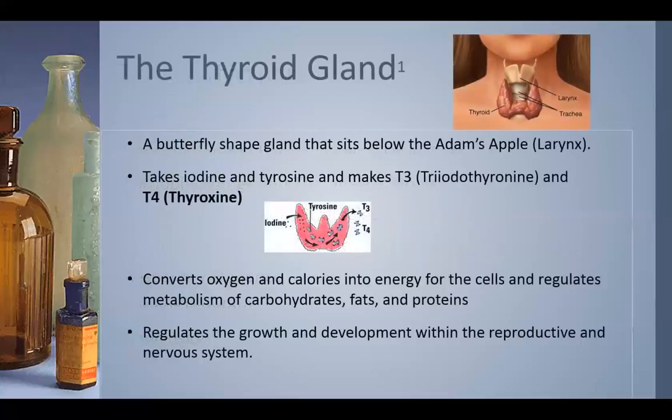The thyroid gland is a butterfly-shaped gland sitting right below the larynx. It produces two hormones: T3 triiodothyronine and T4 thyroxine. It does this by taking up iodine from the bloodstream, mixing it with tyrosine, and then producing these two hormones. T4 is like potential energy — it needs to be converted to T3 to actually be used by cells in the body.